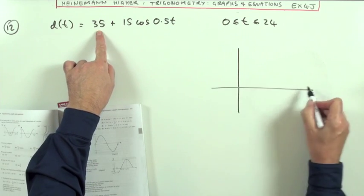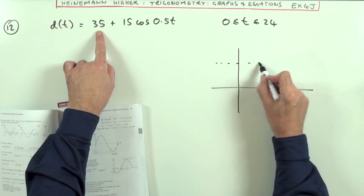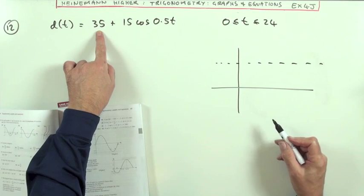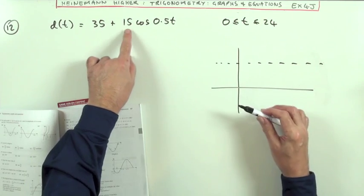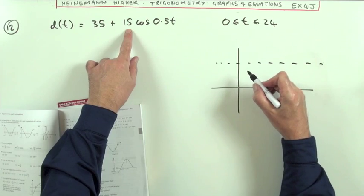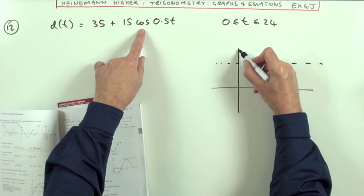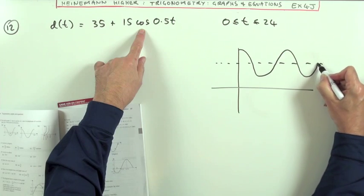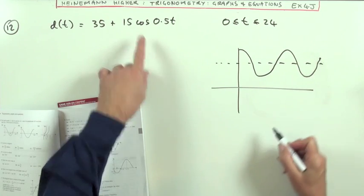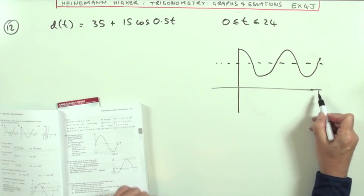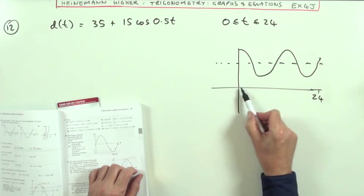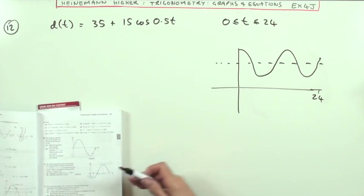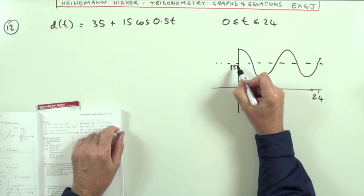Notice it's starting 35 up. So starting 35 up, that's the mean level, the mean water level, because it's oscillating, and it's going up and down 15 about that, but it's a cosine. So it's going from 15 above to 15 below, and it's going to go through that almost two times by the time you get to 24 hours. That would be the proper number of wavelengths there. So what's that? So that's at 35.